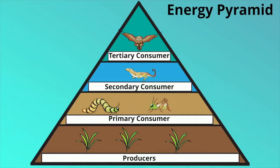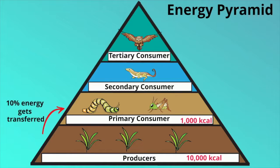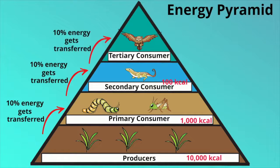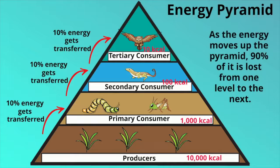As primary consumers eat producers, they only get 10% of the actual energy. So if it starts off as 10,000 kilocalories, they'd only get 1,000. When secondary consumers eat primary consumers, they also only get 10% of that energy, making it only 100 kilocalories. And as tertiary consumers consume secondary consumers, again, only 10% of that energy gets transferred. As the energy moves up the pyramid, 90% of it is lost from one level to the next.